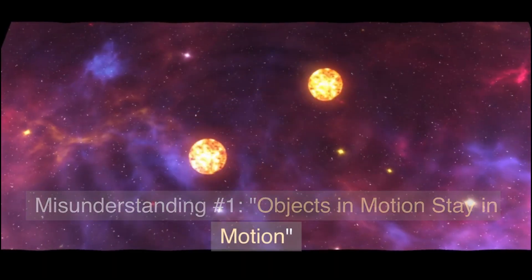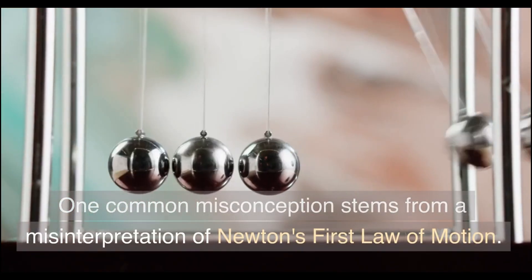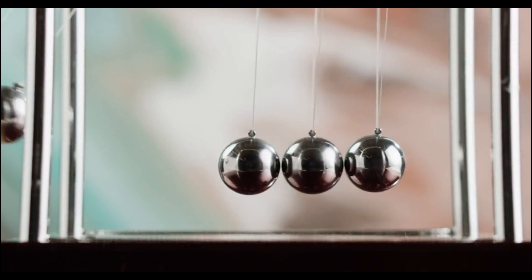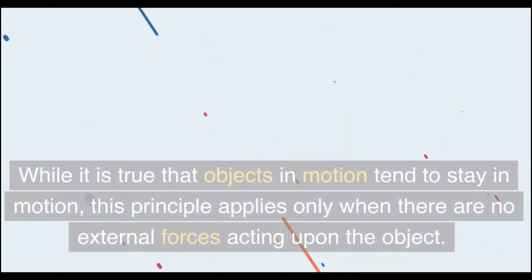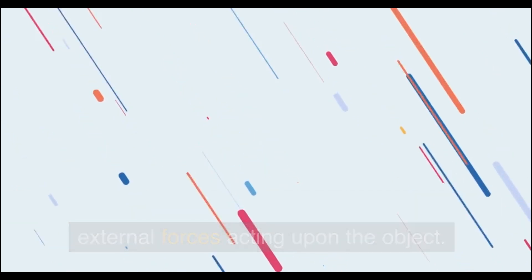Misunderstanding number 1: Objects in motion stay in motion. One common misconception stems from a misinterpretation of Newton's first law of motion. While it is true that objects in motion tend to stay in motion, this principle applies only when there are no external forces acting upon the object.